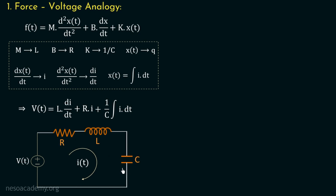We can now draw the electric circuit for this equation. This is a series RLC network with voltage V(t) and current I(t). Applying KVL in the loop: the total voltage is V(t); the voltage across the resistor is RI; the voltage across the inductor is L(di/dt); and the voltage across the capacitor is (1/C)∫i dt. This is the electrical analogous network of the given physical system drawn using force-voltage analogy, where the applied force F(t) is replaced with voltage source V(t).